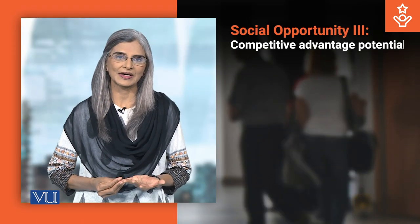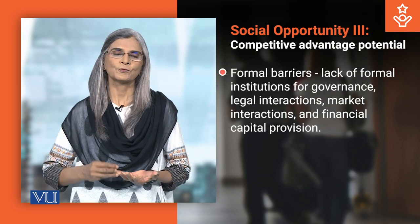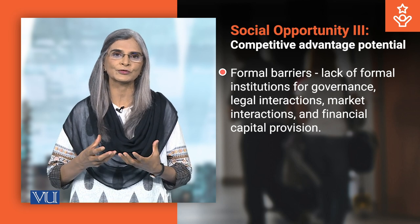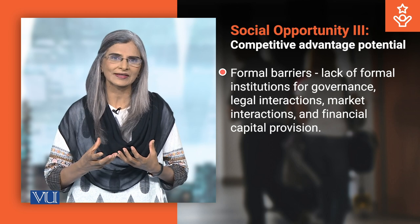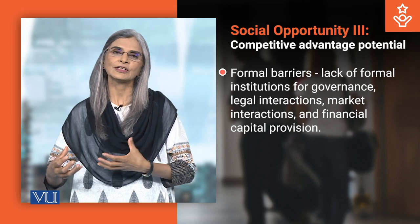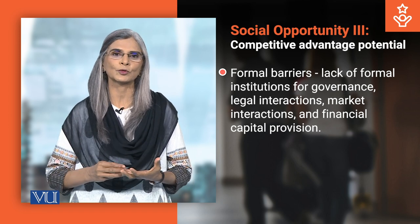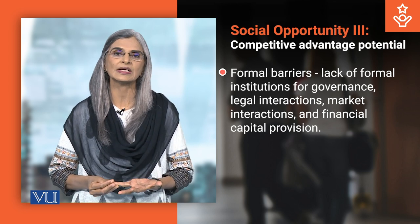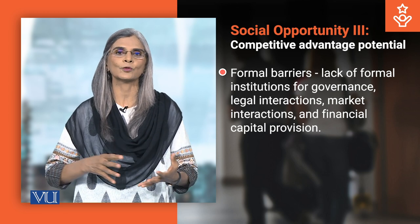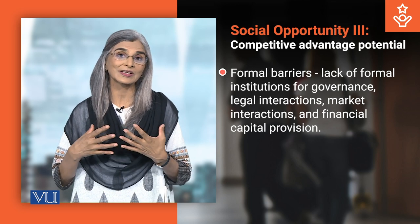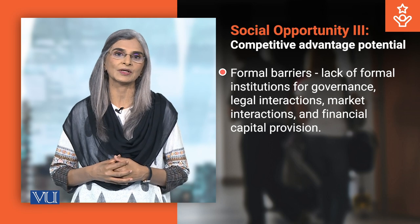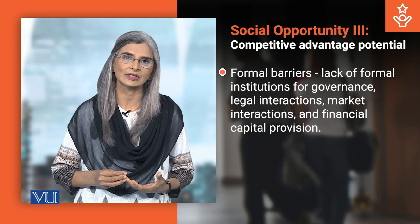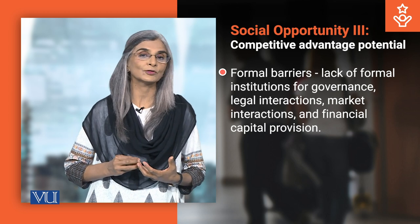The fourth type of barriers to entry is formal barriers. Formal barriers mean that governance structures are not available and laws are not available. If you are not trained in that work and don't understand the legal landscape, these things turn potential social entrepreneurs' ideas into a disadvantage rather than an opportunity. It does not become a competitive advantage.